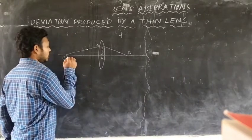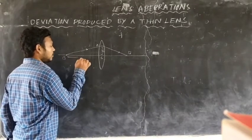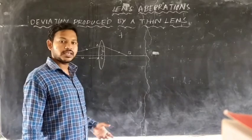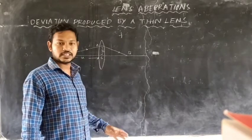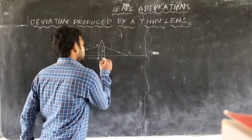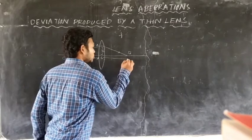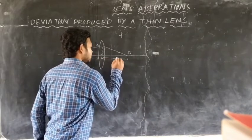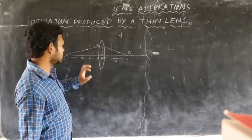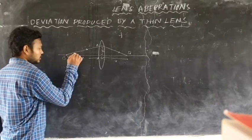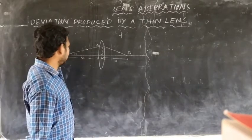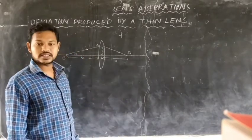The distance between the object and the center of the lens is U. The distance between the center of the lens and the image is V. Let us take alpha as the small angle between the incident light rays and the principal axis of the lens.